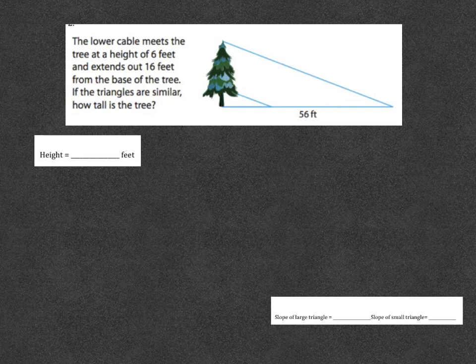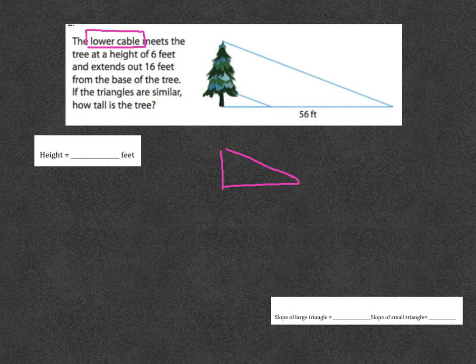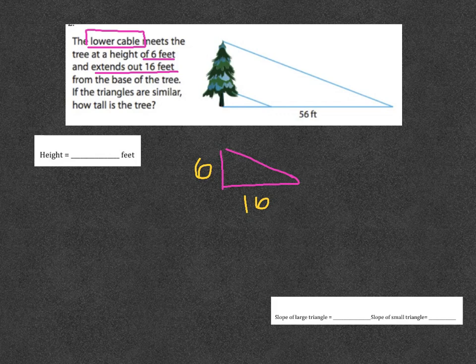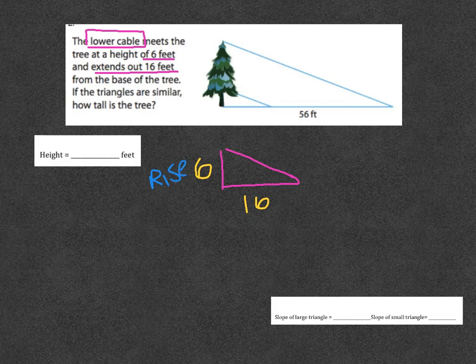So I'm going to underline or I'm going to highlight some important information. This is talking about the lower cable. So when I draw these two triangles separately, here is the tree - the lower cable is the one I just drew - and it says it meets the tree at a height of 6 feet. So that's going to be 6. And it says it extends out 16 feet. So this is going to be 16.